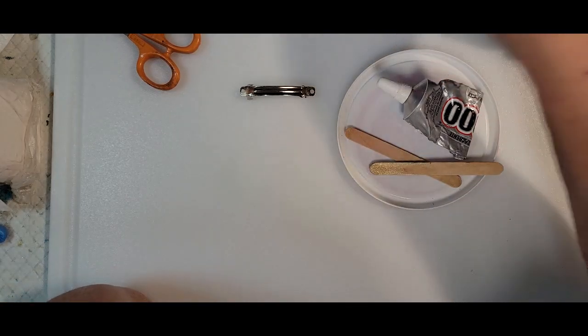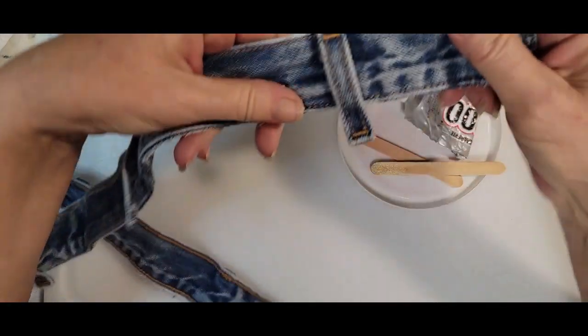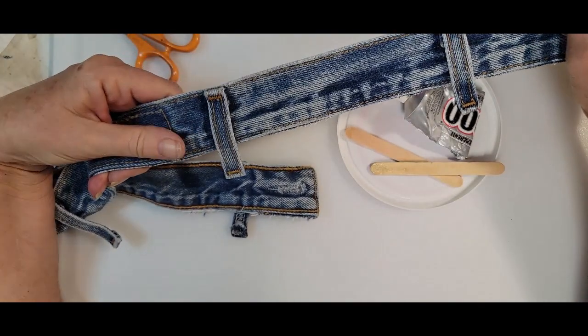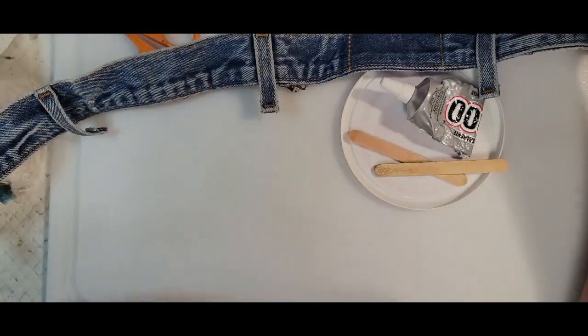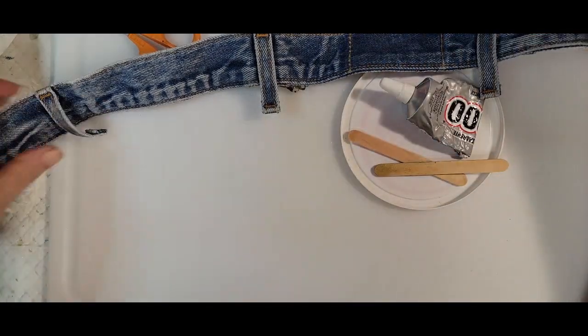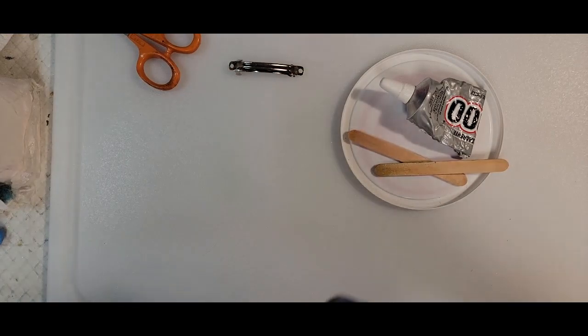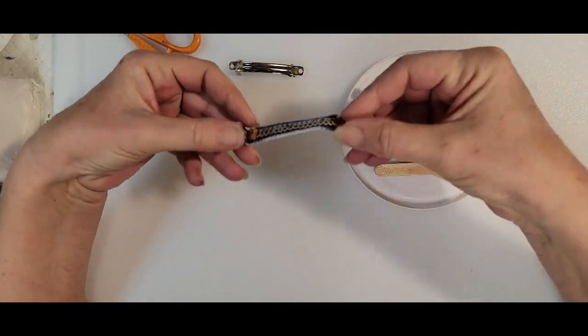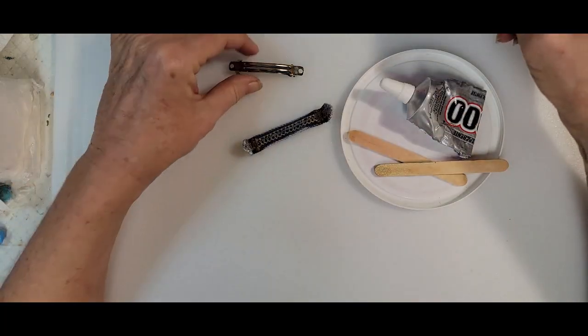Now I've made jean quilts through the years for my kids and of course Billy being Billy saves everything. Here's a waistband and what we're going to use from this waistband of a pair of jeans is a belt loop.